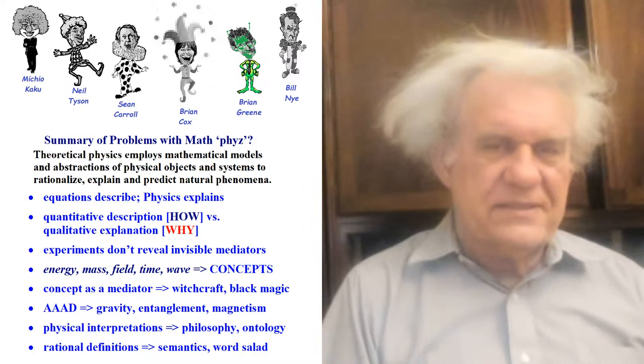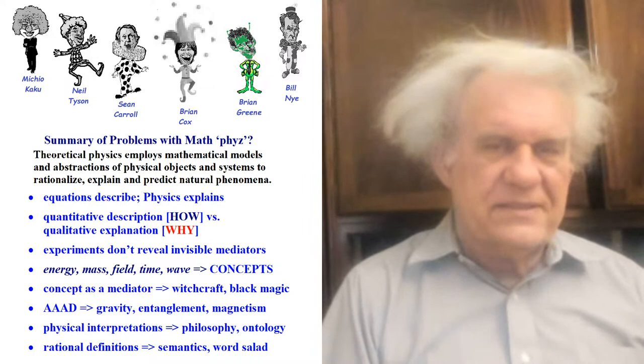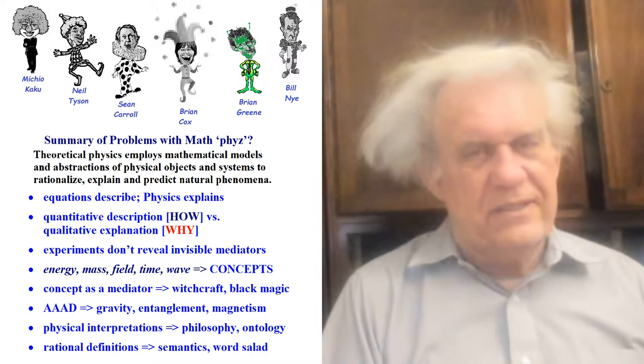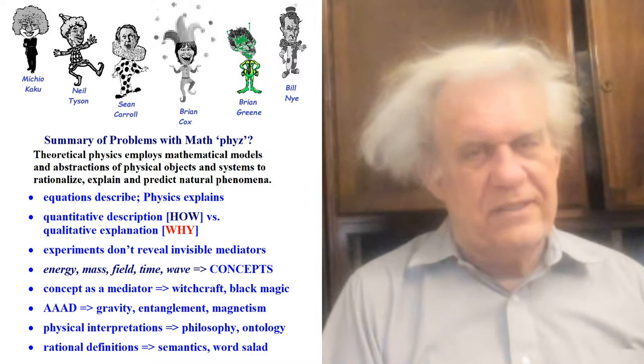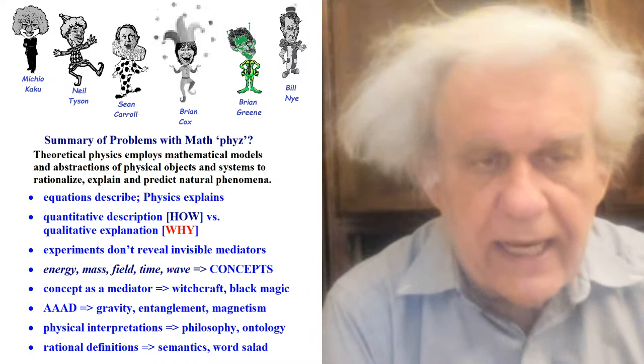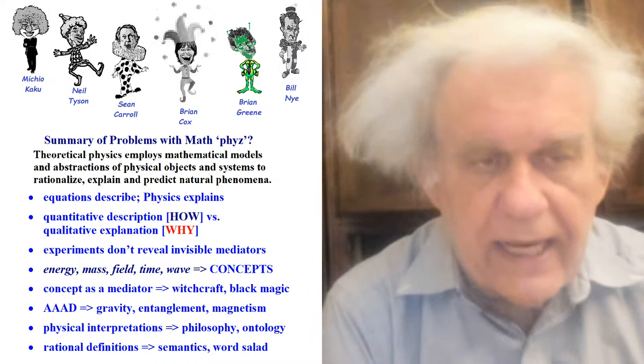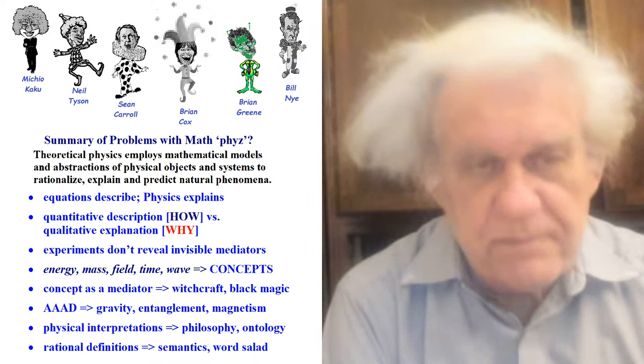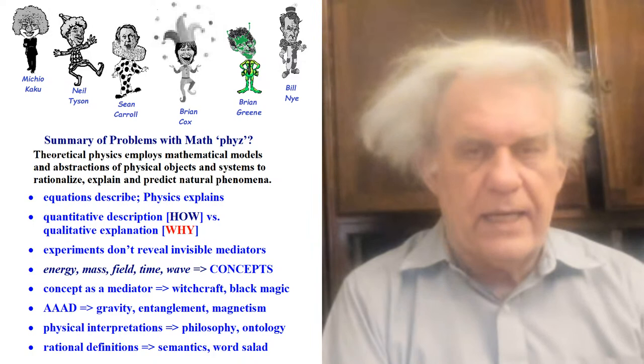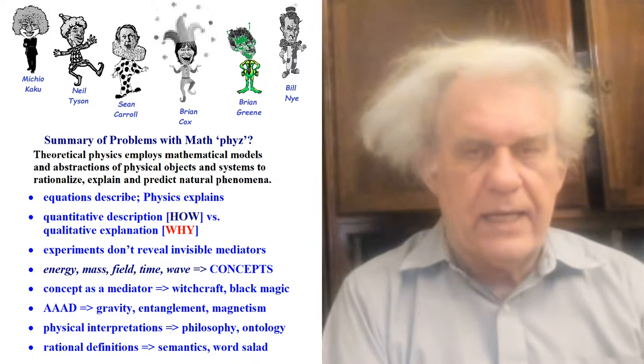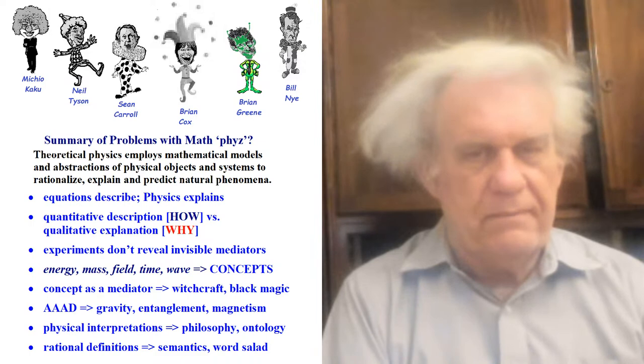They talk about philosophy. When you question their conclusions, they say: that's a physical interpretation, that's philosophy, we don't do that. Here you have the definition of a theoretical physicist: employs mathematical models and abstractions of physical objects and systems to rationalize, explain, and predict natural phenomena. Every word there is questionable. Physics is not about mathematical models, and abstraction is the opposite of physical.